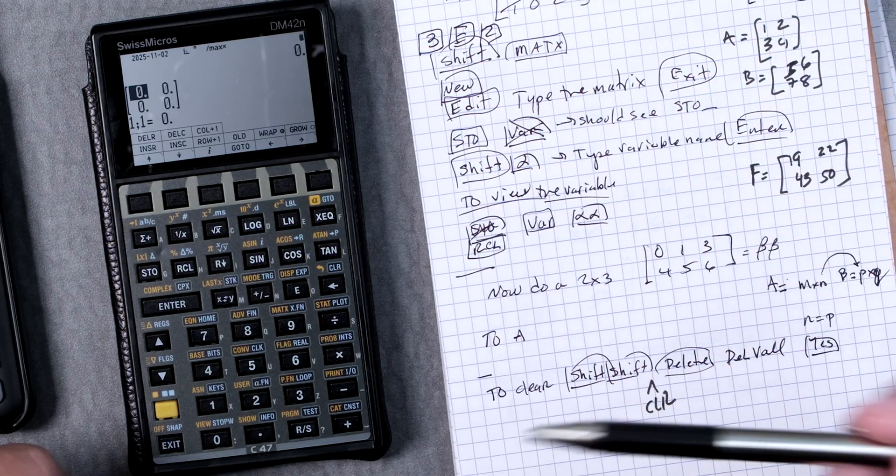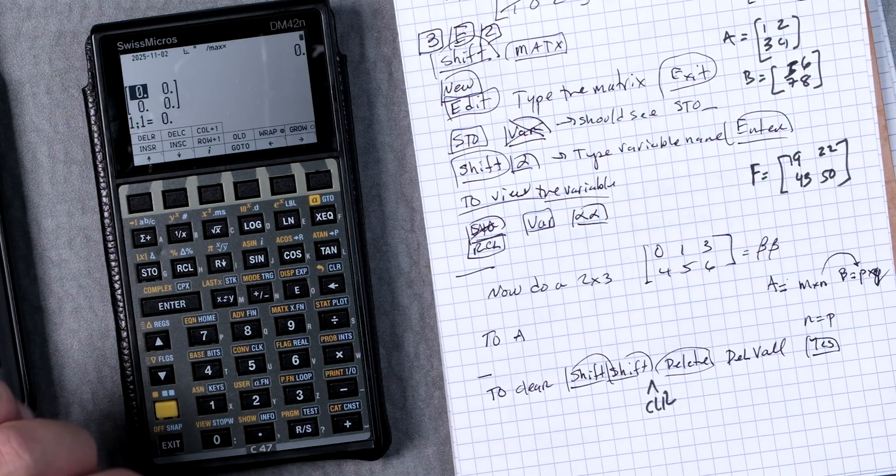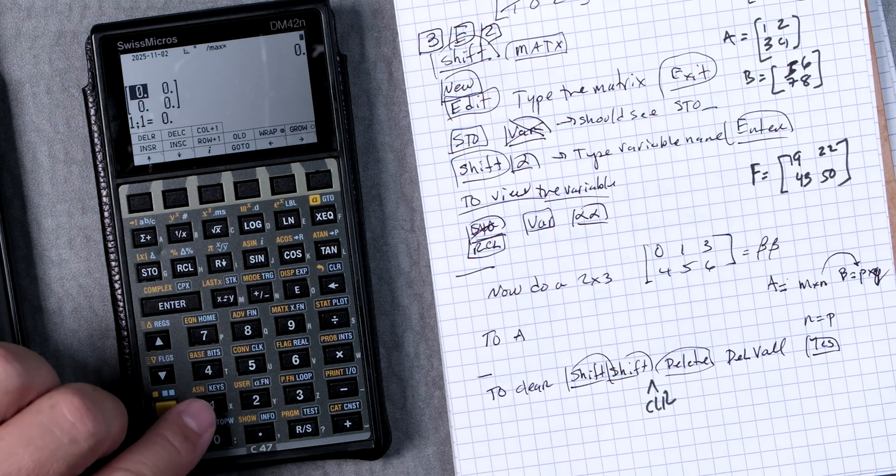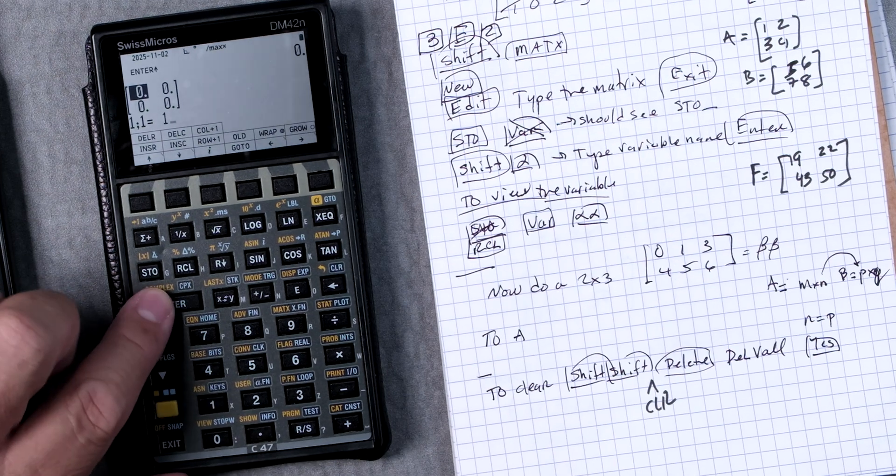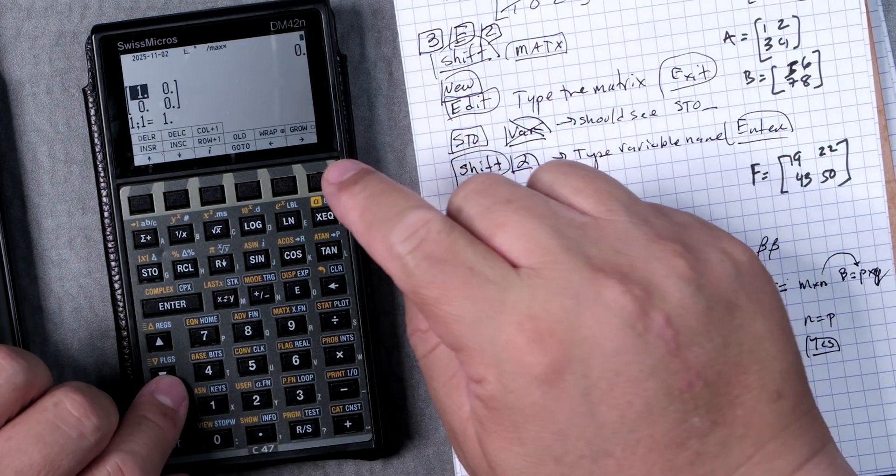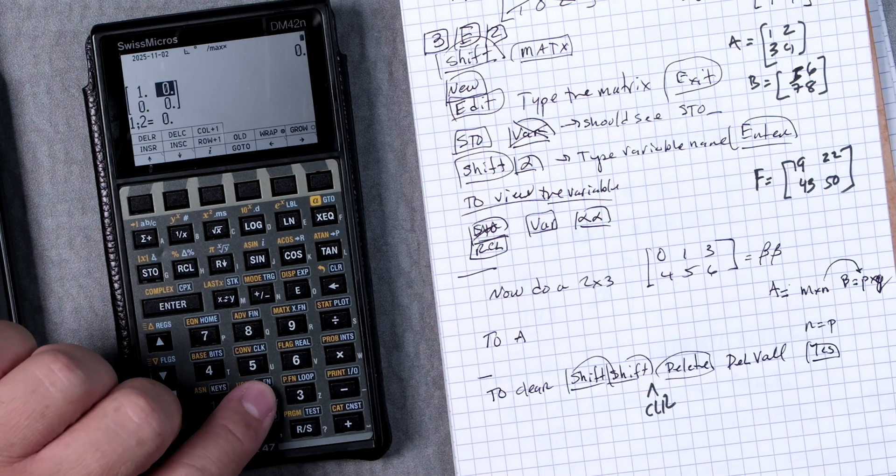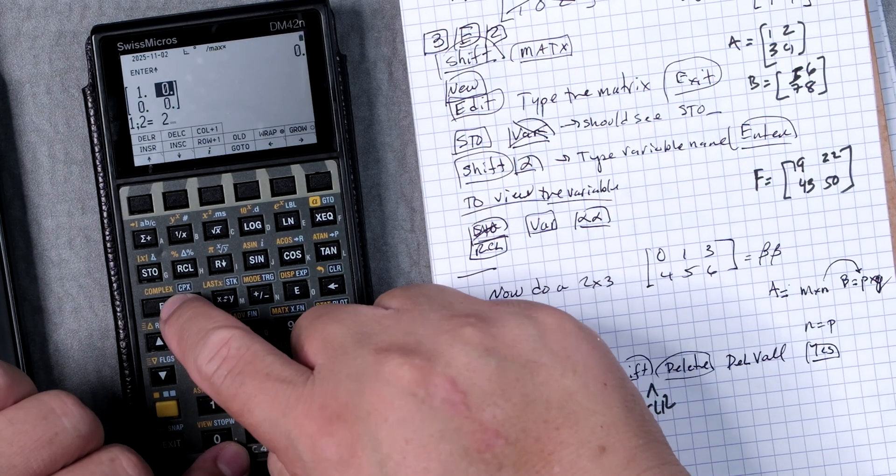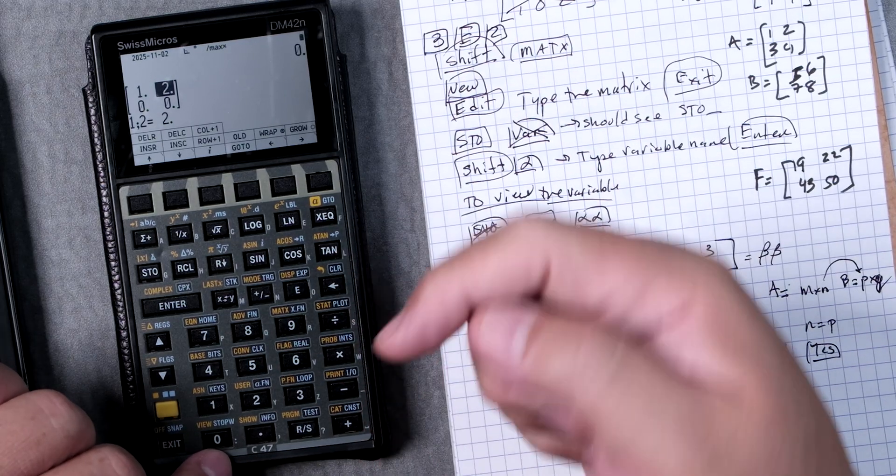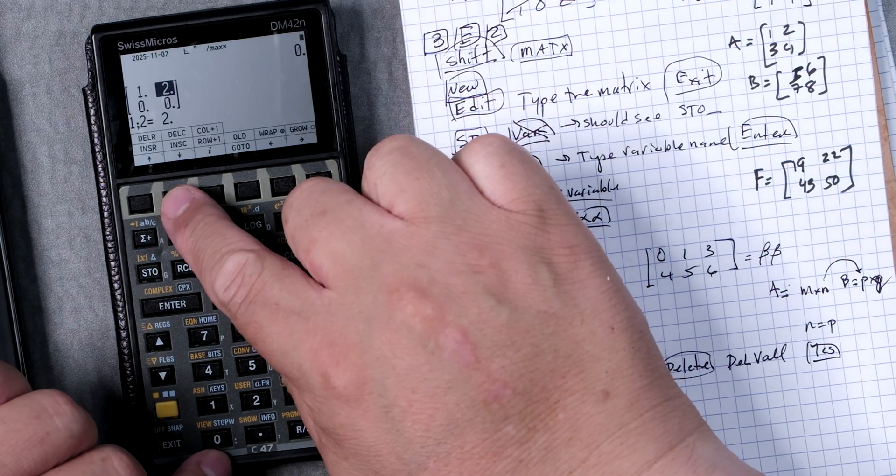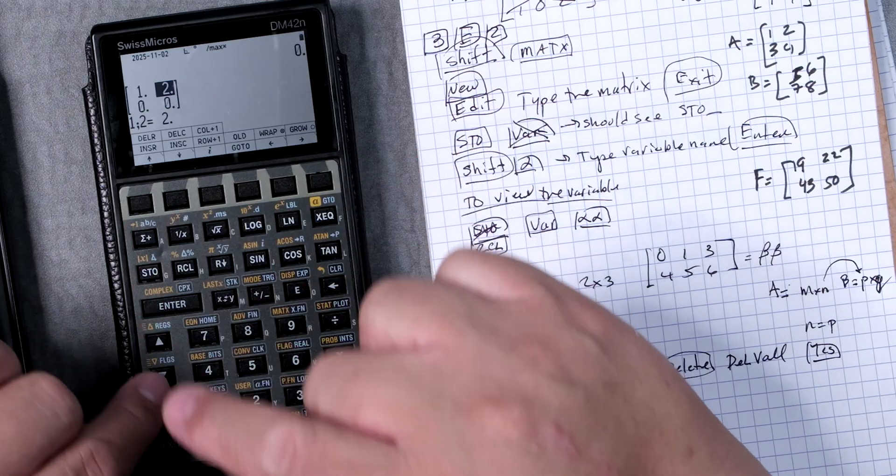By pressing edit we are in edit mode. We type one here and we can press enter. I think we'll move over. We can use this right here. I'm going to do two. We can press enter. We don't have to press enter, you'll see. We can go down right here or up or we can use these.